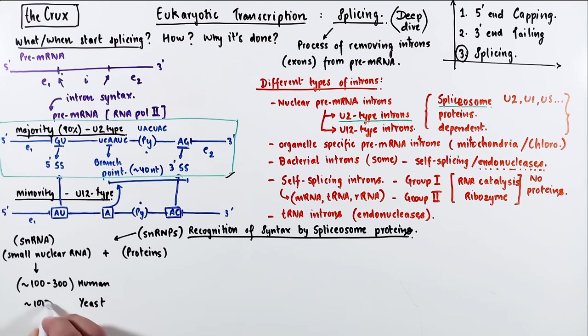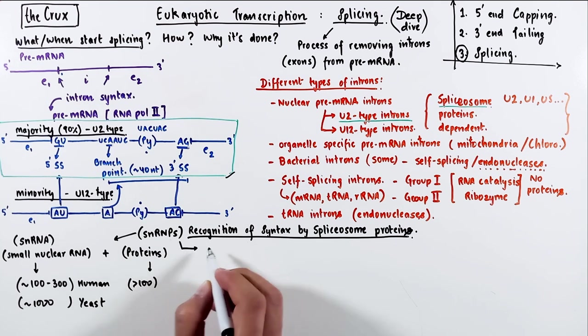The small nuclear RNAs are about 200 nucleotides on average in humans, and in yeast or simple eukaryotes, they're quite longer, about 1,000 bases. The protein components of these snRNPs are actually quite diverse, and they have on the order of about 100 or more proteins associated with them.